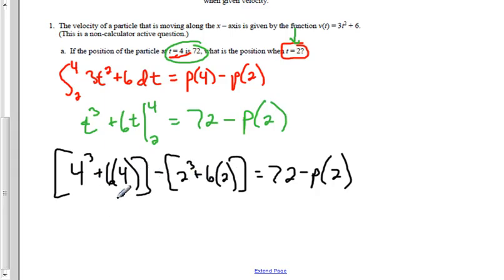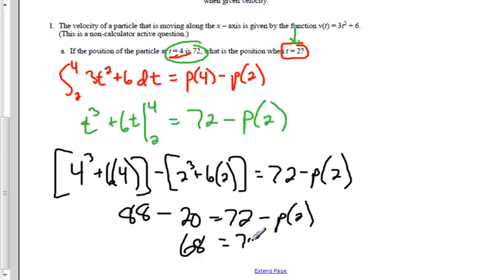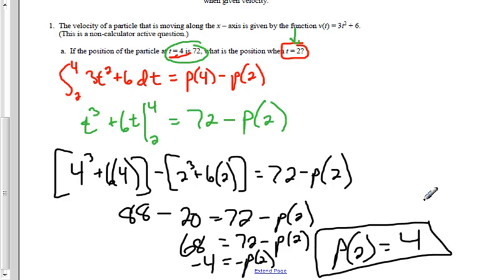4³ is 64 plus 24 is 88. 8 plus 12 is 20. Now this becomes an algebra problem: 88 minus 20 is 68. So 68 = 72 - p(2). Subtract 72 from each side, so I get -4 = -p(2). Therefore, the value of the position function when time is 2 seconds is 4.